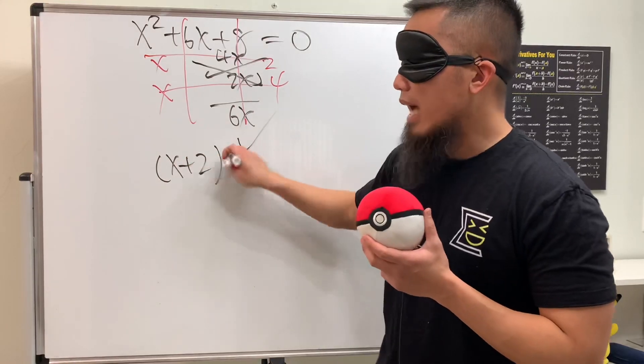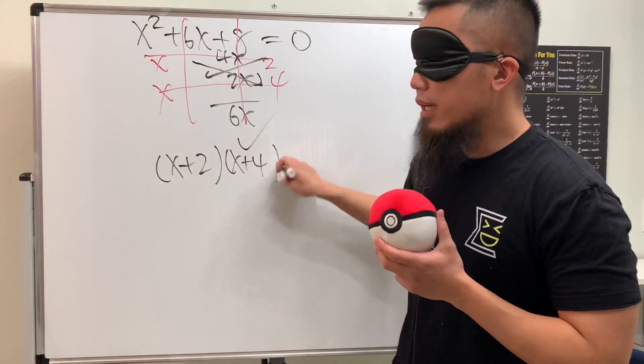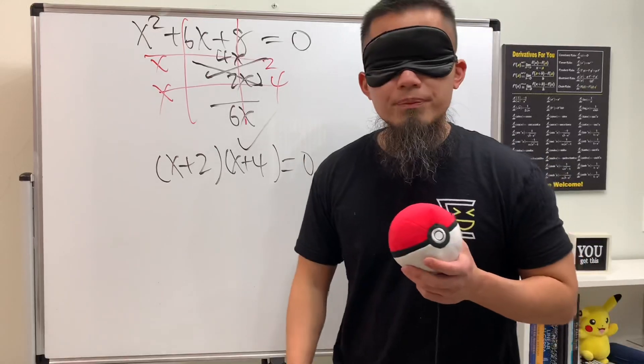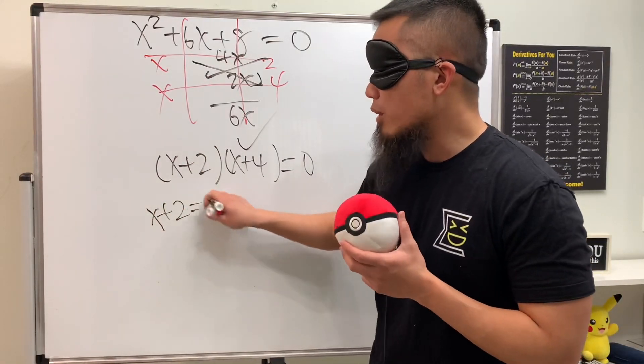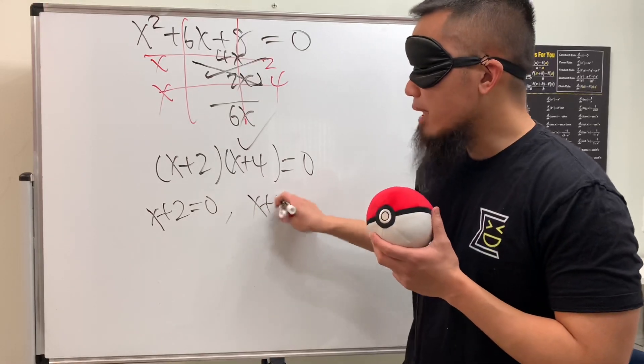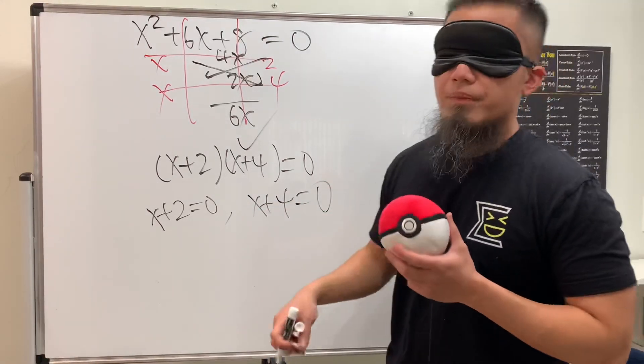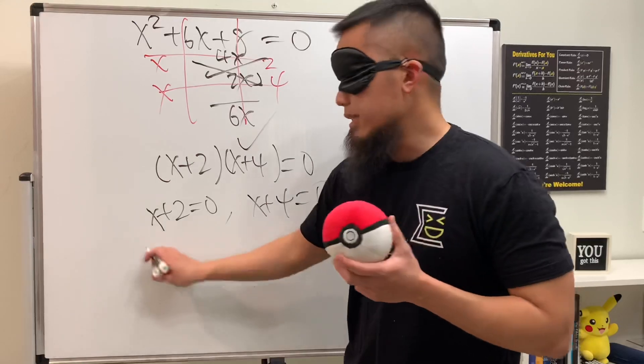And don't forget to put down the equals 0. Now we can make the first factor, x + 2, equal to 0, and then the second factor x + 4 equal to 0. For the first one, minus 2 on both sides, so we get x = -2.